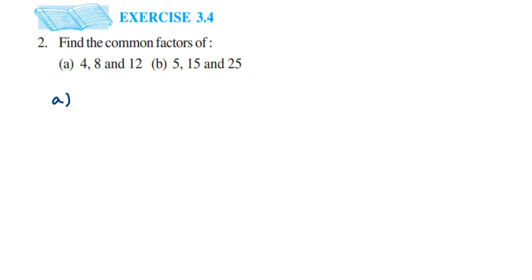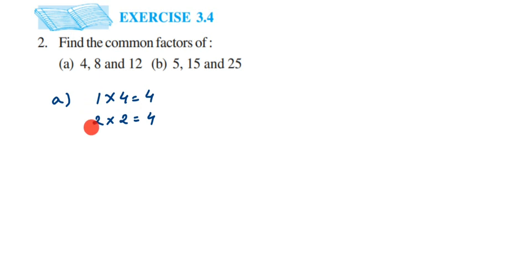The first number is 4. Every number goes in the 1 times table, so 1 × 4 = 4. It also goes in the 2 times table: 2 × 2 = 4. It doesn't go in the 3 times table, and 4 × 1 is the same as 1 × 4, so we don't repeat it. The factors of 4 are 1, 2, and 4.